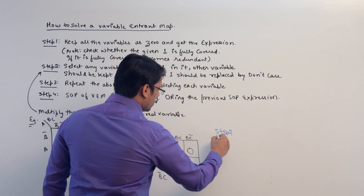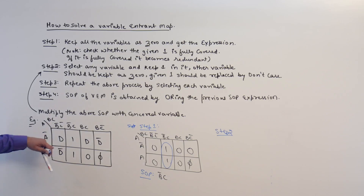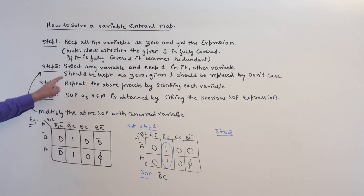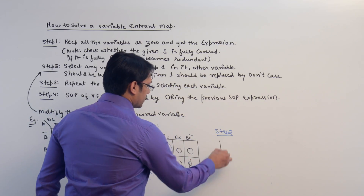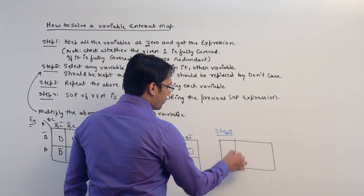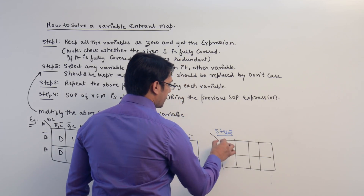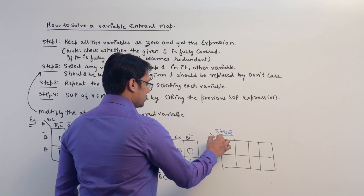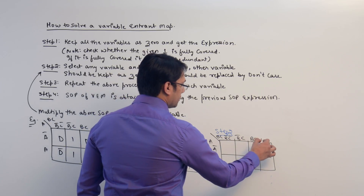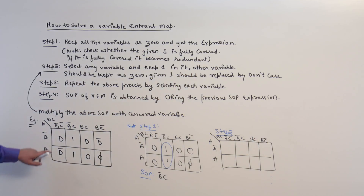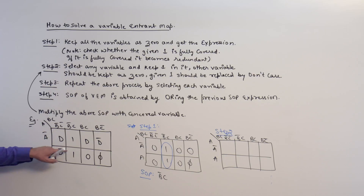What is step number two? If we have d and d complement, consider d and d complement as separate variables. Put d as one — select any variable, keep it as one, and the other variables should be kept as zero, and every one should be kept as a don't care combination. For this K-map, this is a, this is bc, this is a complement and a, b complement c complement, b complement c, bc, and bc complement.